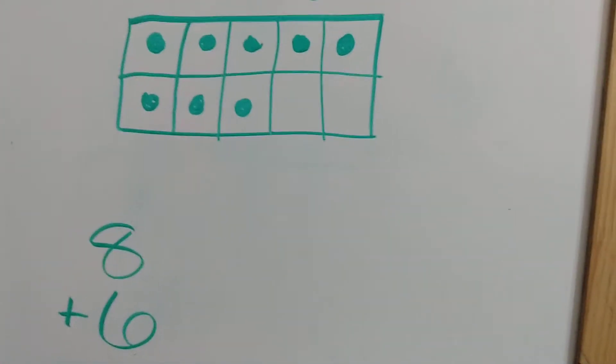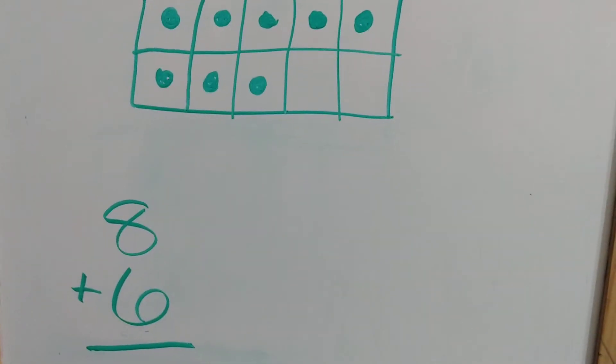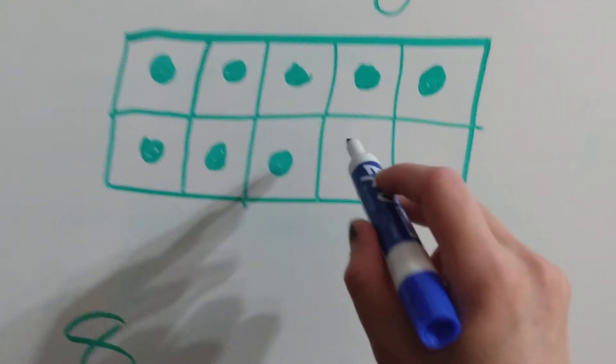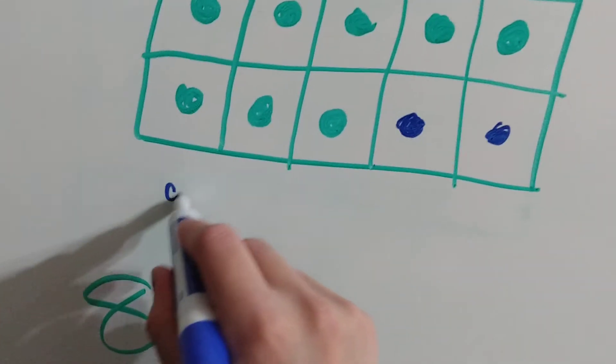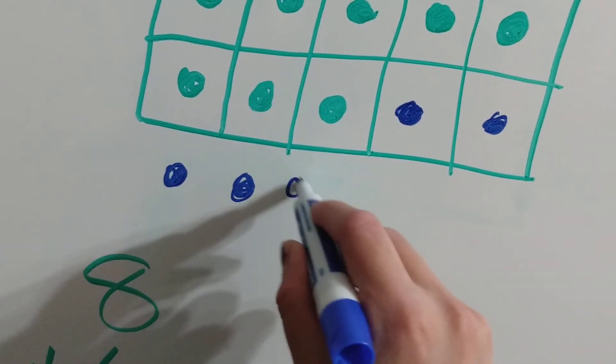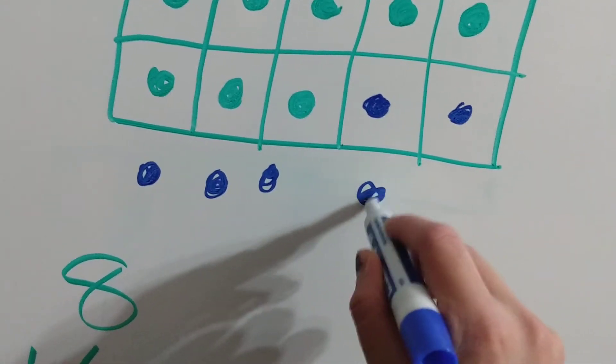So we're just going to add 6 more counters. Are you ready? So we're going to put 2 in here. 2, 3, 4, 5, 6.